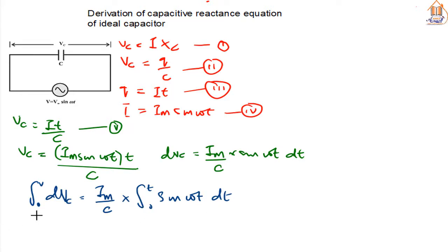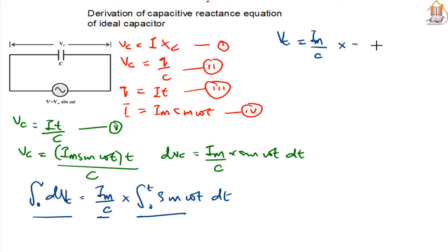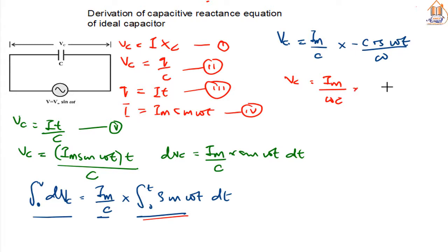Now, if we integrate this, the integration of sine is going to give us minus cosine. So we have minus cos(ωt) all over ω. Therefore, we have our VC equal to IM all over ωC times minus cos(ωt).